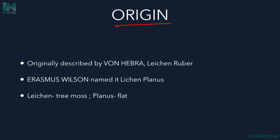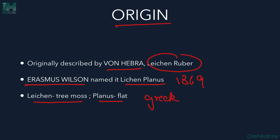A little bit about the origin of Lichen Planus. It was described originally by von Hebra, who called it Lichen Ruber. Erasmus Wilson named it Lichen Planus in 1869. Lichen means tremos and Planus means flat in Greek.